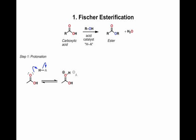Here's our first reaction: Fischer Esterification. We take a carboxylic acid in the presence of excess alcohol and an acid catalyst, which we're going to call HA, and we end up with an ester. In the first step,